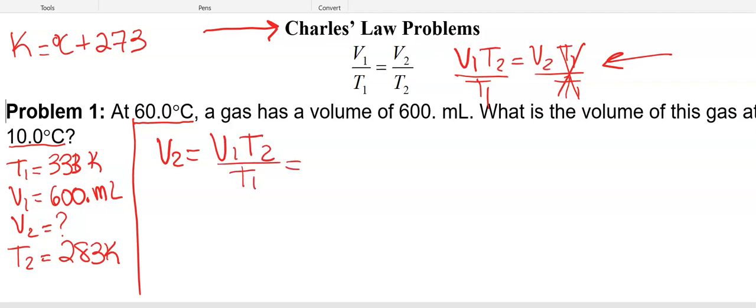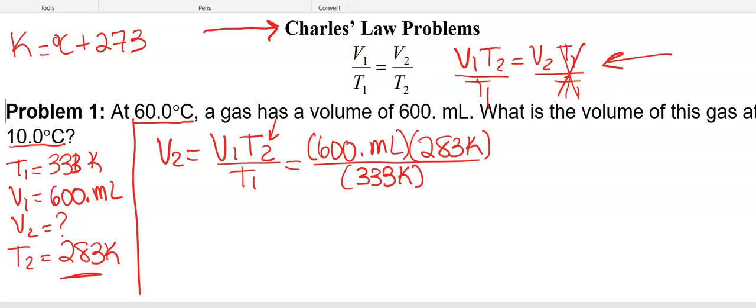So now I'm going to plug the numbers in. Remembering that this one is T2, so we have to use this number. And then divide it by our T1. Now, Ms. Augustine's steps. Always read the problem, identify the variables, rearrange the equation. That's what I was doing here. Plug the numbers in. That's what I'm doing here.